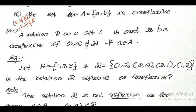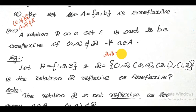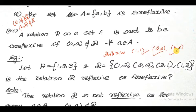Now here I will give one more example. Let A = {1, 2, 3} and R = {(1,2), (2,2), (2,3), (1,3)}. The question is: is the relation R reflexive or irreflexive? To check if a relation is reflexive, the relation should contain (1,1), (2,2), and (3,3). We check if those three pairs are present in this relation or not.